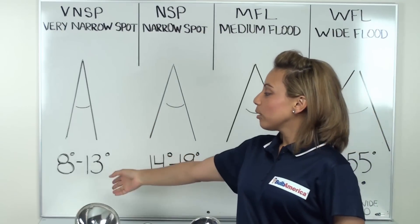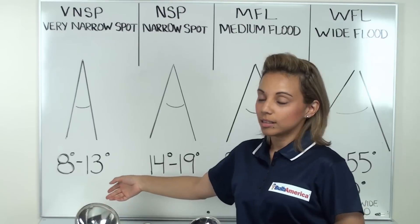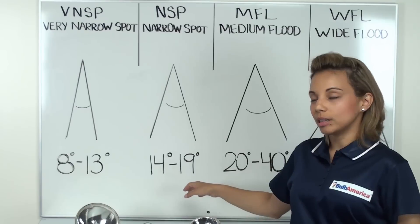Now, in a very narrow spot, you're going to get a range of 8 degrees to 13 degrees. In a narrow spot, you'll have a range of 14 degrees to 19 degrees.